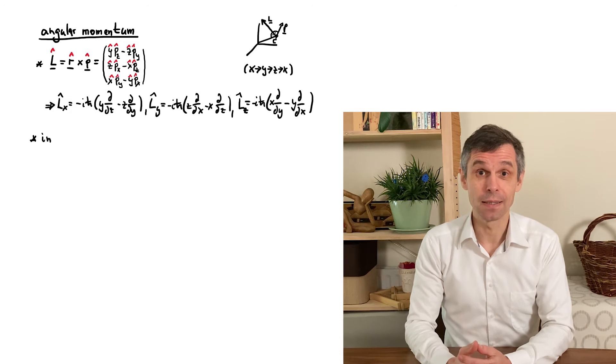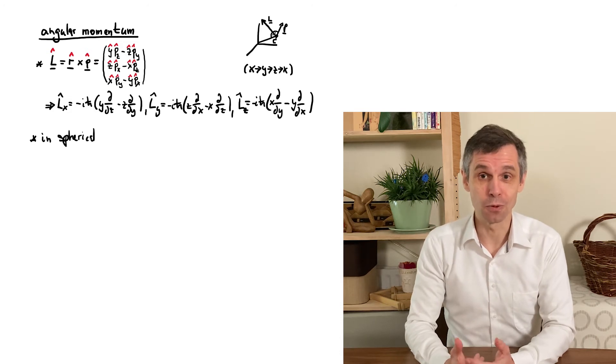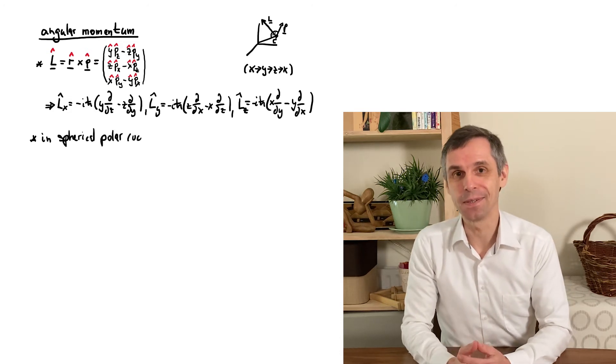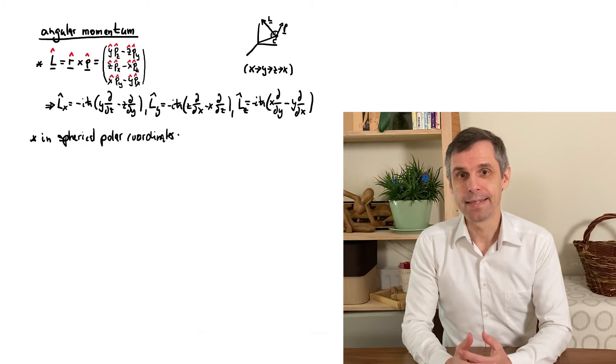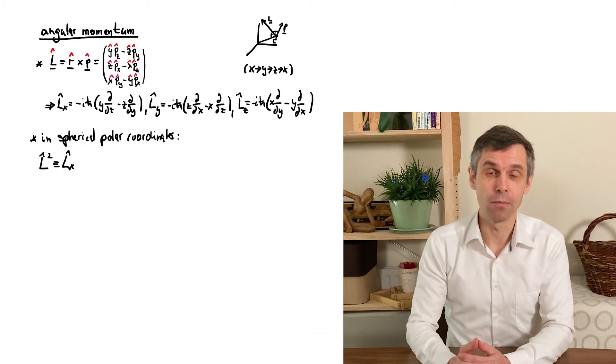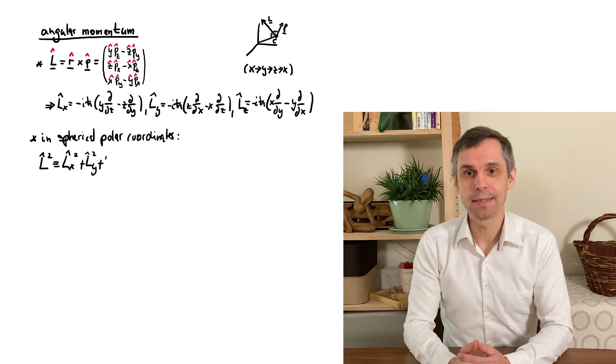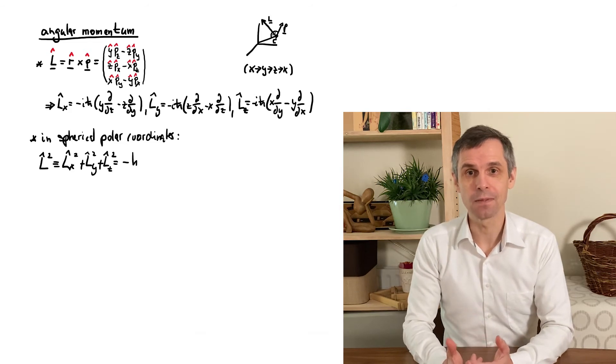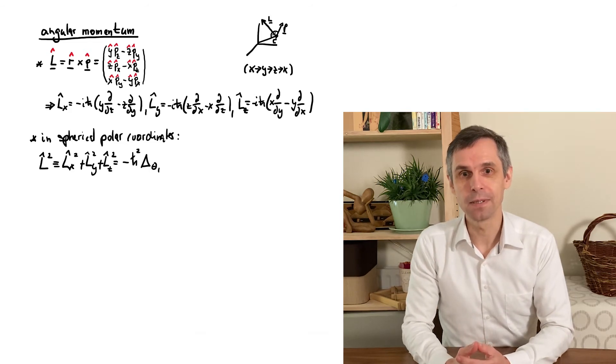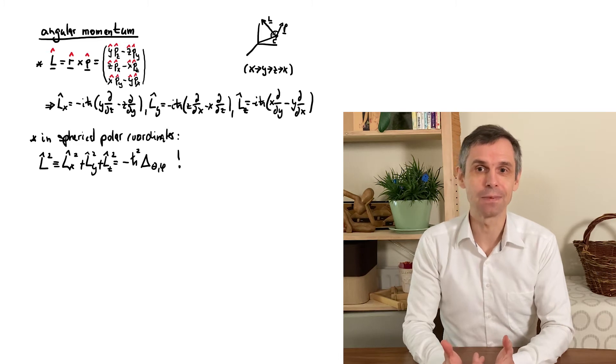But just to make contact to the technical results from before, we can of course rewrite them also with these other coordinates. And then we find that indeed the operator for total angular momentum, L squared, just gives us the angular part of the Laplace operator, including the factor minus ℏ squared that we inferred before.